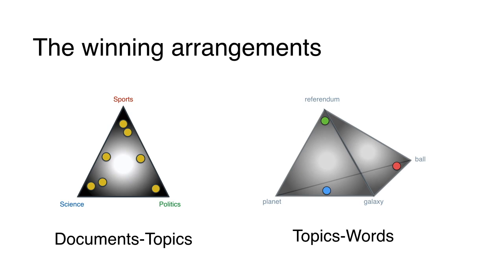How do we get the topics? We look at where the yellow dots are located in the document-topic distribution — that tells us the topics for each article. And if we look at where the green, blue, and red points are located in the word distribution, we can tell — given what words are close to them — what the topics could be. A human is still required here, because the computer only outputs topic one, topic two, topic three and their top words. A human then says, for example, if the top word is 'referendum' then maybe this topic is politics.